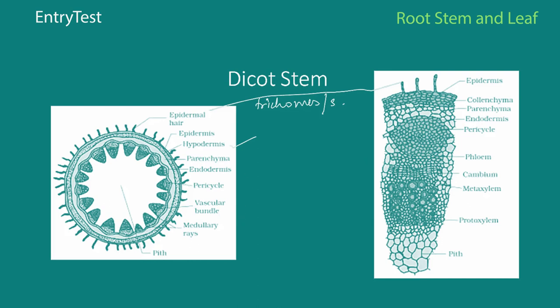Then you have three sub-zones: the hypodermis, then the cortical layers, and finally the innermost layer which is the pith. As seen in the diagram, below the epidermis is the hypodermis, then a parenchyma layer, then a layer of cells called the endodermis, followed by the pericycle, the vascular bundles of xylem and phloem, the medullary rays, and the central pith.